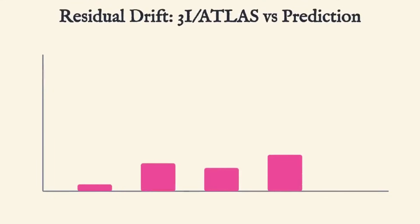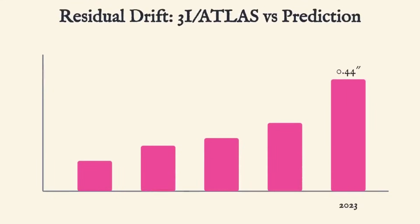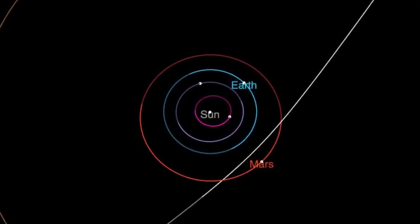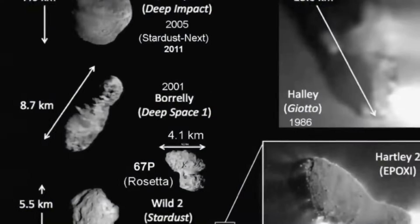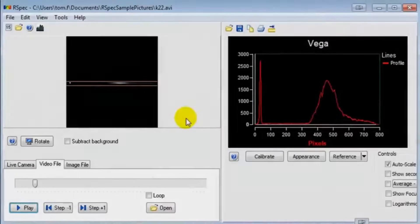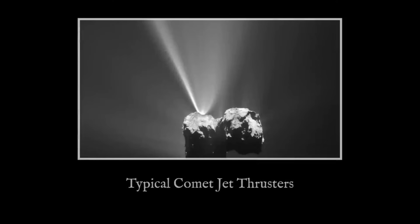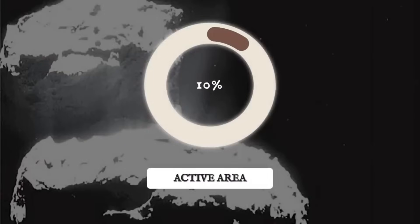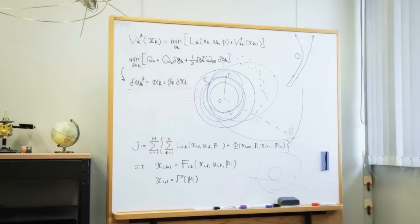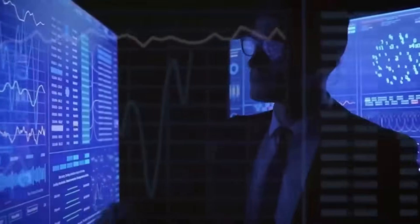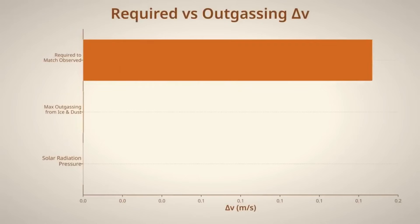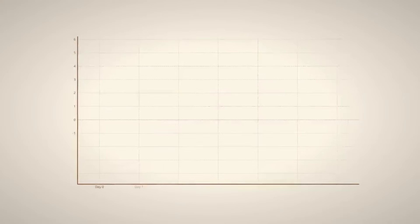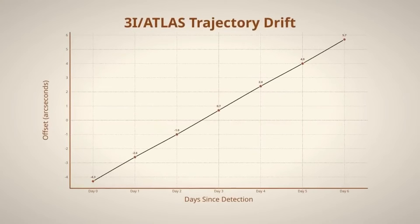When scientists looked even closer, they found something else that made no sense. Most comets release both nickel and iron together, like a matched pair that always shows up at the same time. It's been true for every comet ever studied. But 3I/Atlas was releasing bright streams of nickel with no iron at all. It's like finding a left shoe with no right shoe anywhere in sight. The scientists ran their instruments again and again, checking for errors, calibrating their equipment, and running every test they could think of. Maybe there was a mistake in their data, or perhaps their instruments were malfunctioning. But every test confirmed the same impossible result.